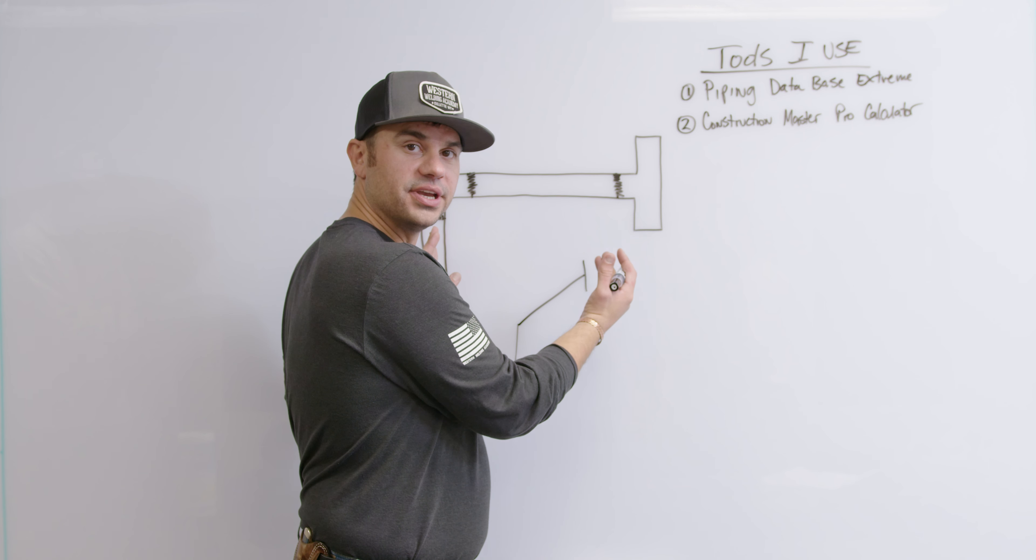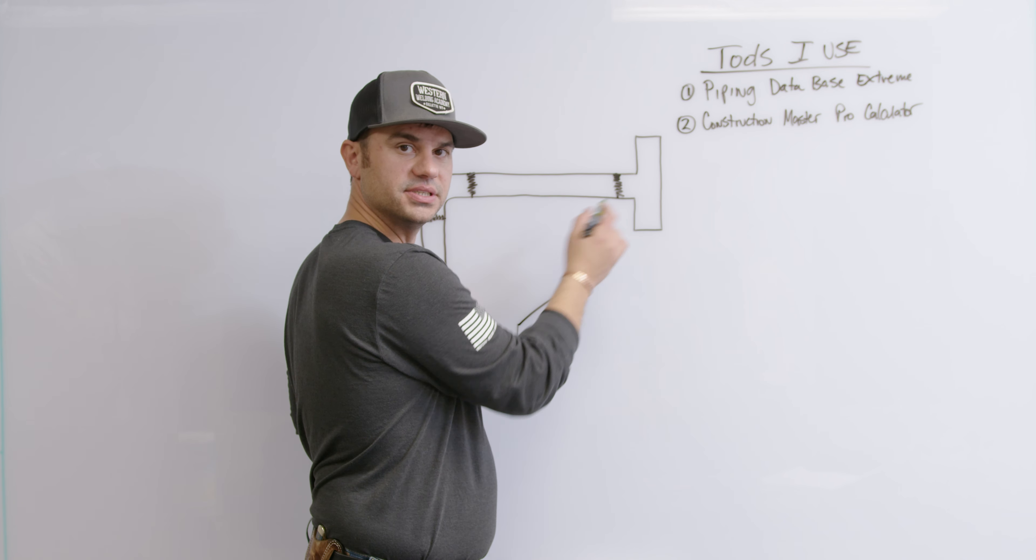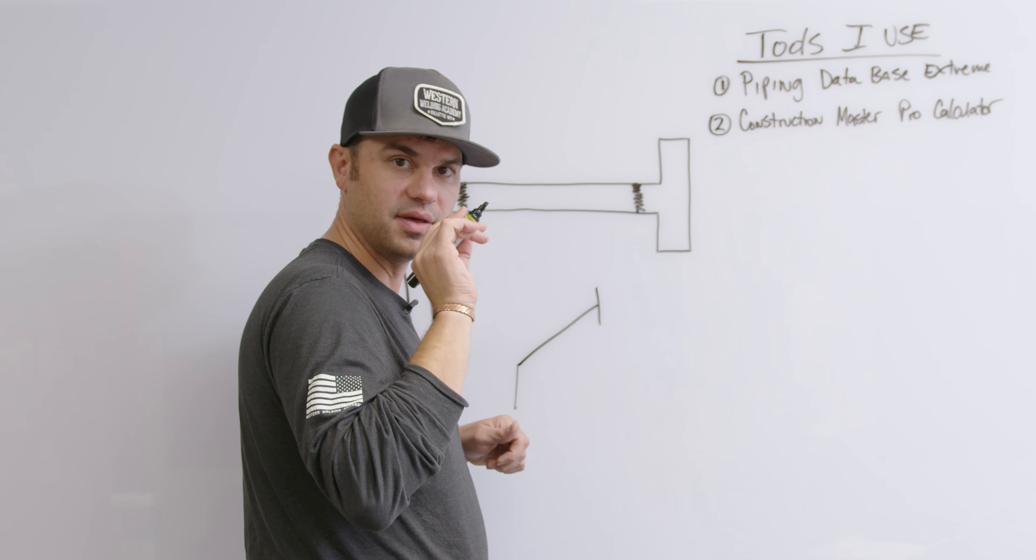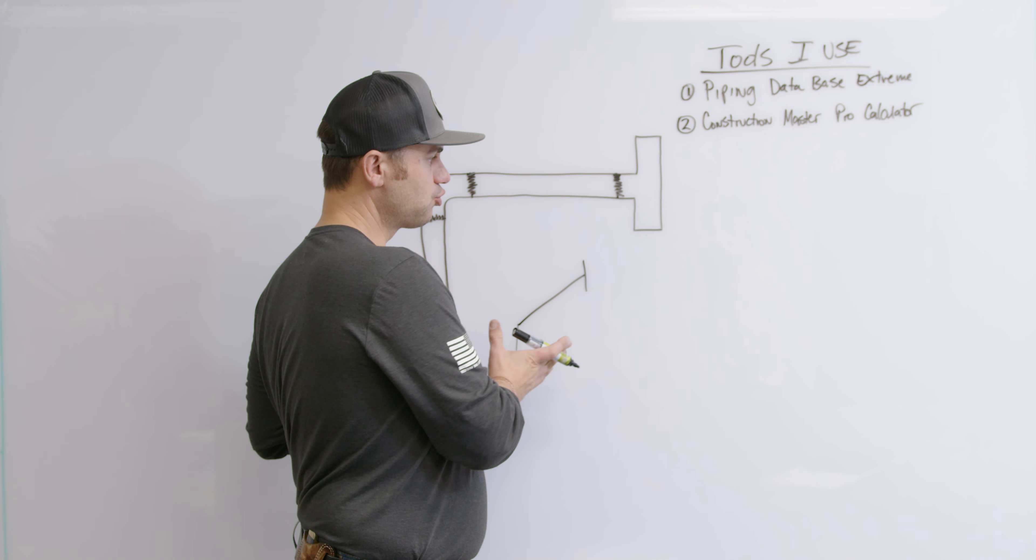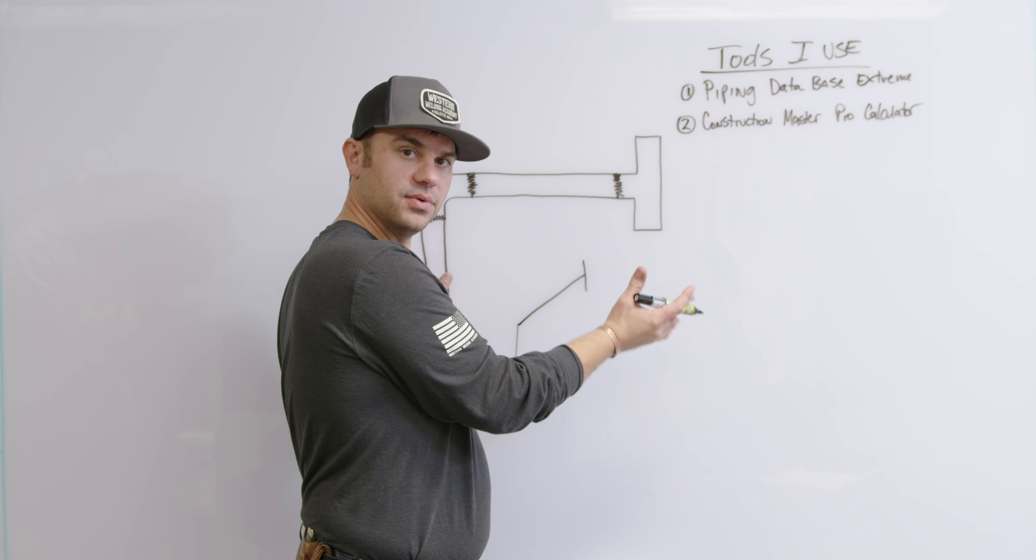These are what we call spool drawings that you fabricate piping off of and the big thing to know really as a welder, this is the weld. Part of your job as a welder is to make these welds. Make them good, make them clean, and make them within code.